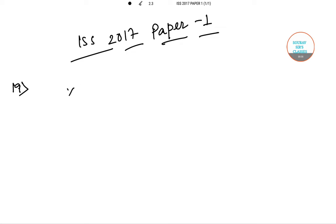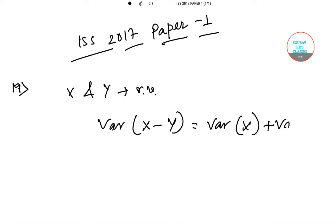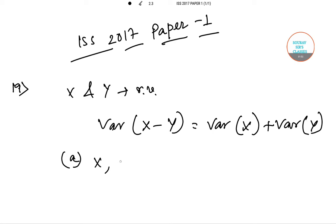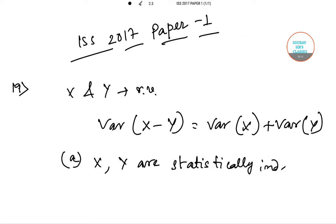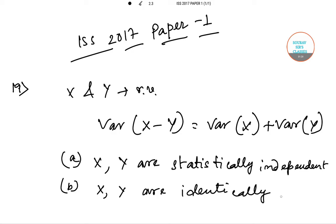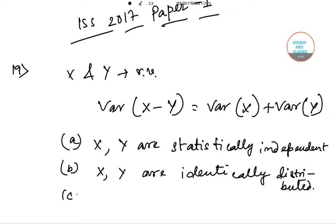Question 19: Let X and Y be two random variables. Which one of the following conditions is sufficient for the relation Var(X − Y) = Var(X) + Var(Y) to hold? The conditions are: (A) X and Y are statistically independent, (B) X and Y are identically distributed, (C) X equals Y, and (D) for any X and Y.